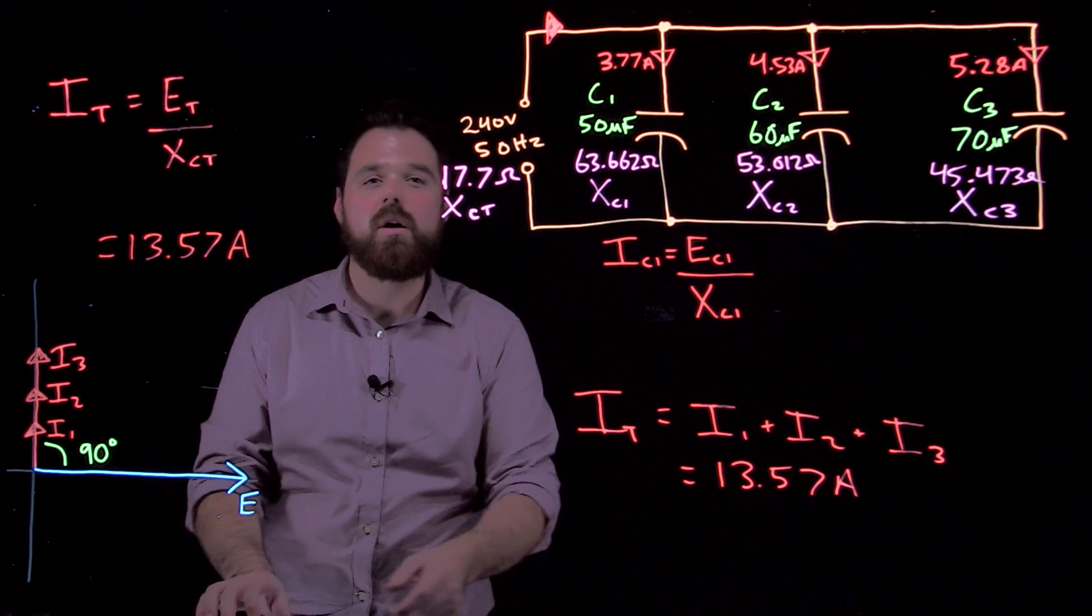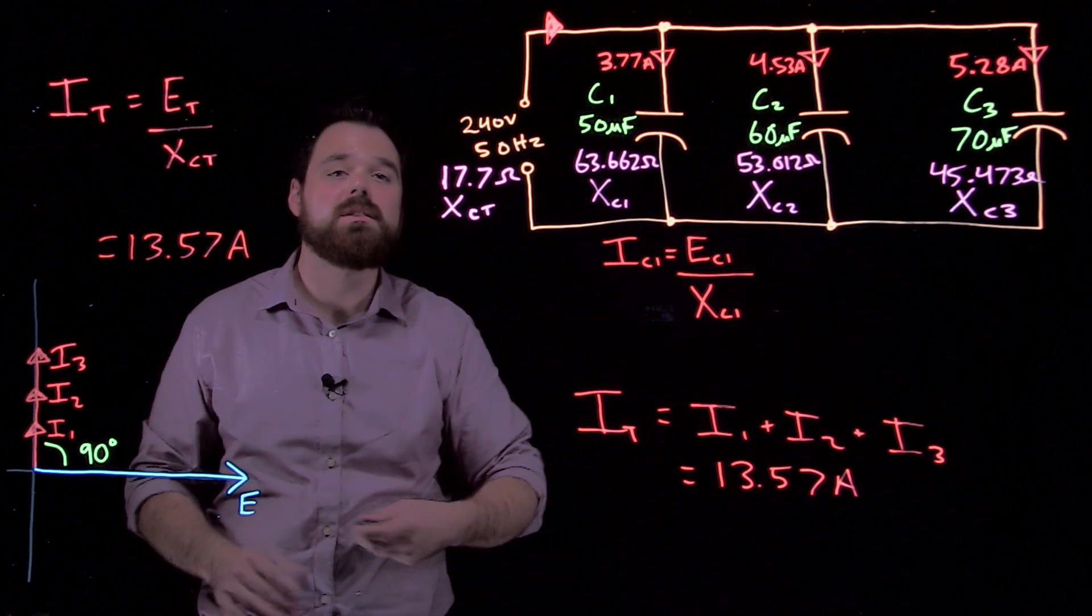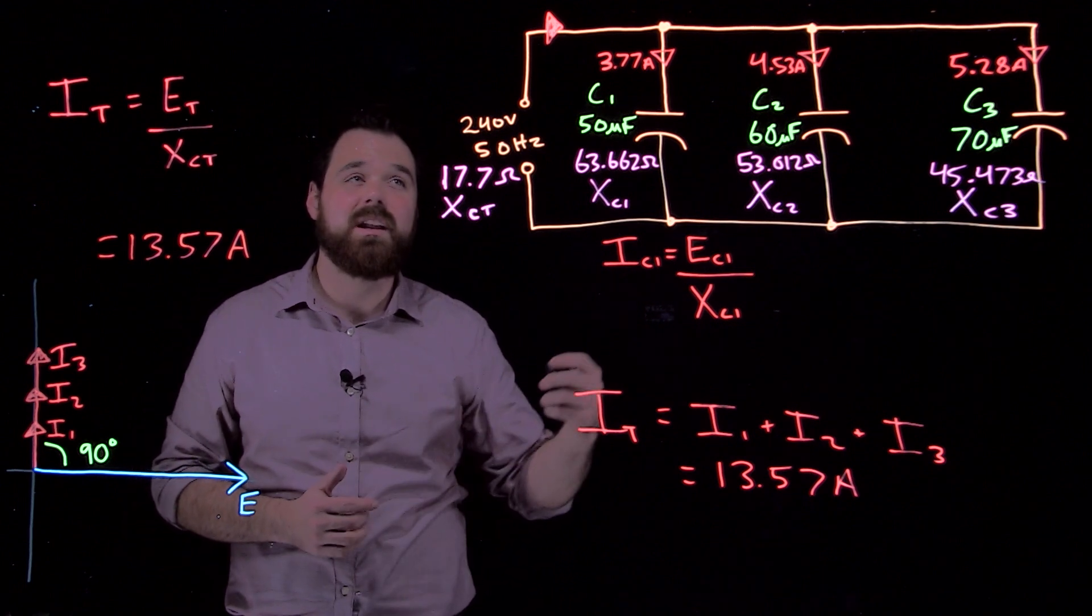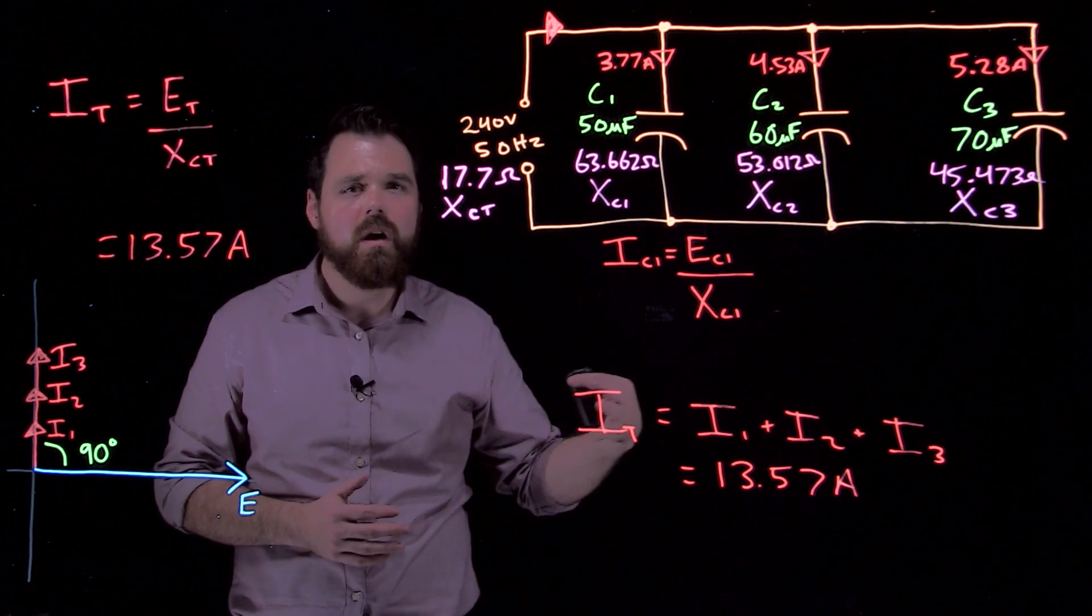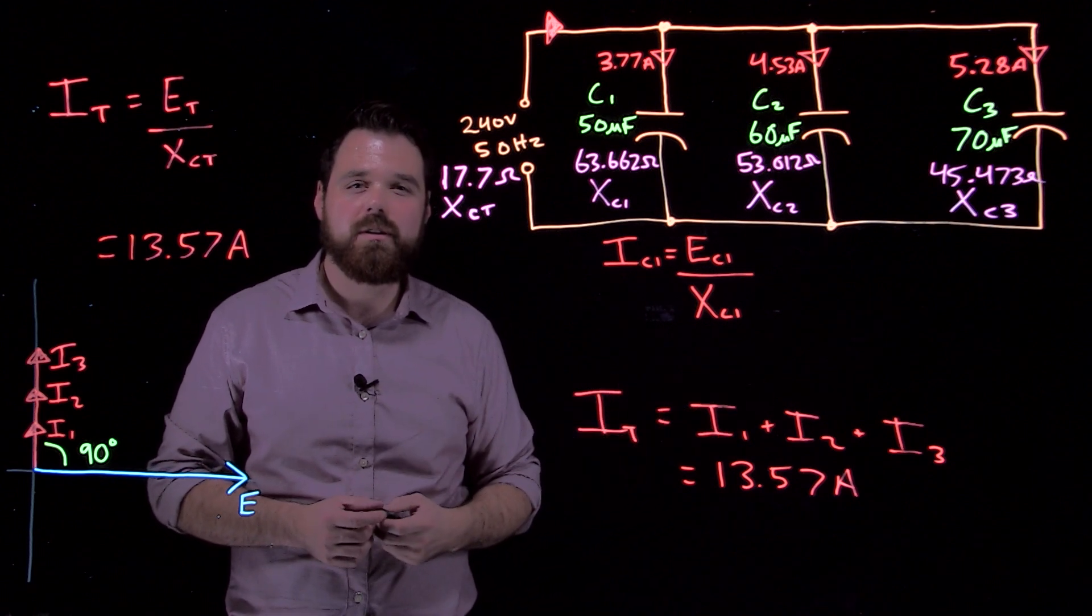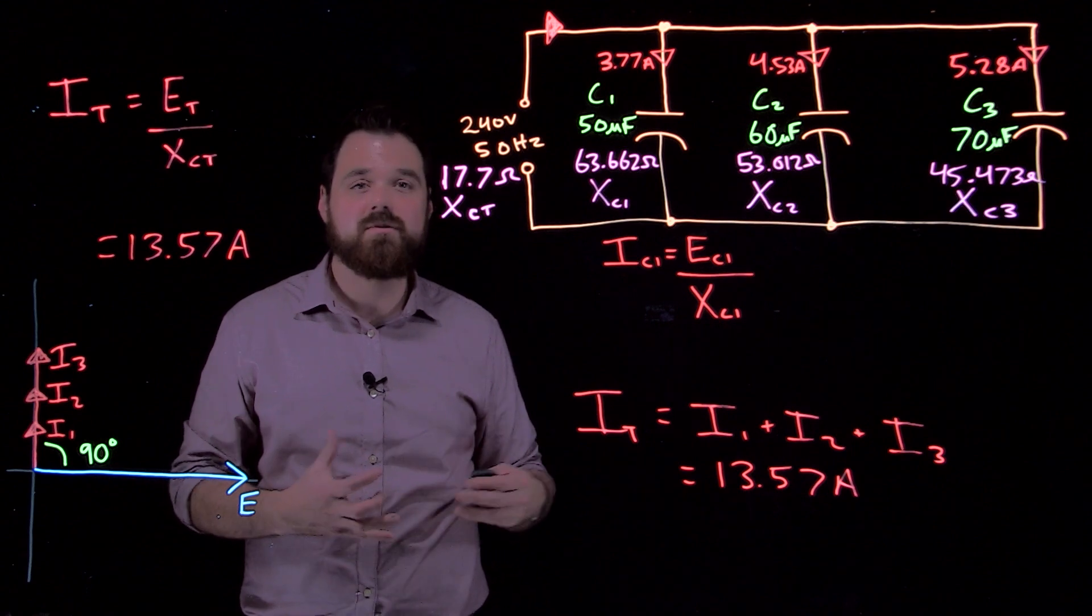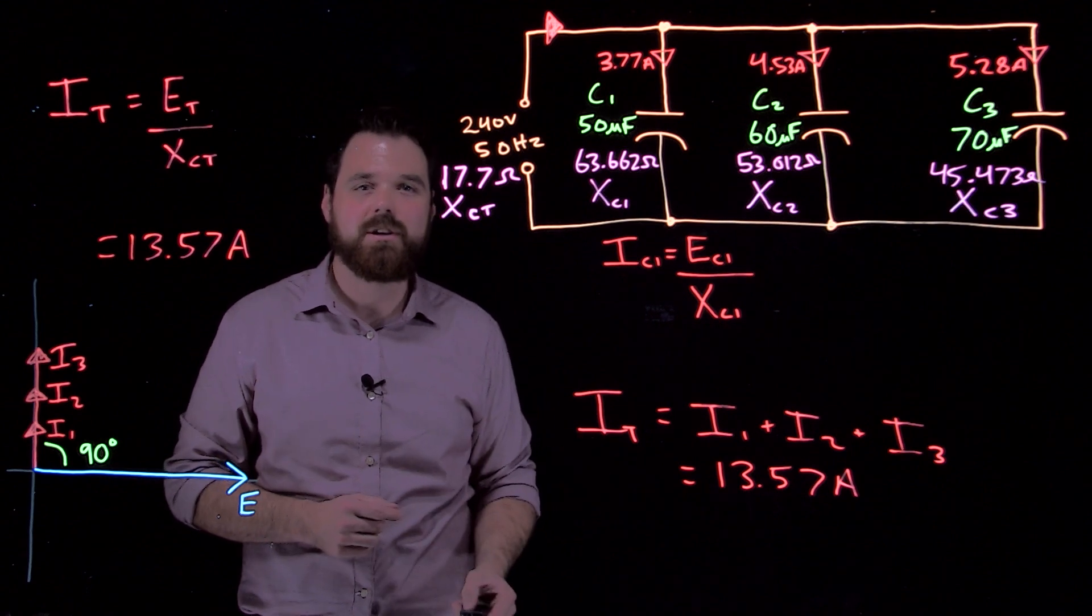So that's how voltage and current work together in a circuit containing only capacitors. We'll definitely get into some more videos later on, dealing with different types of circuit properties. Thanks for watching.